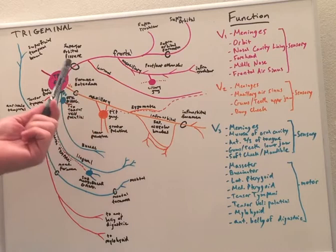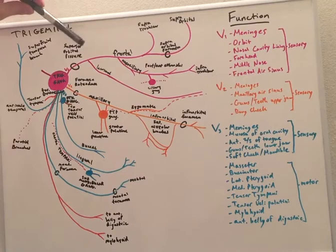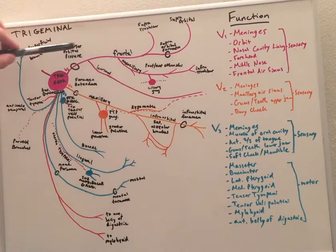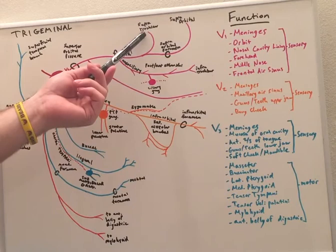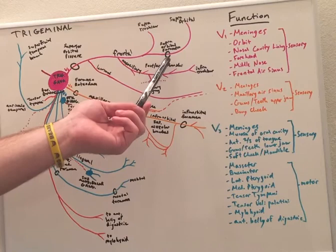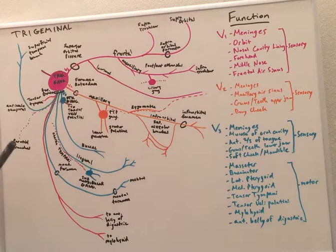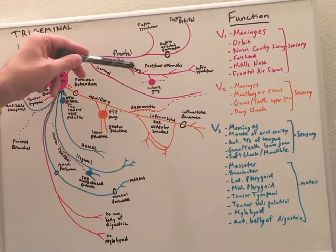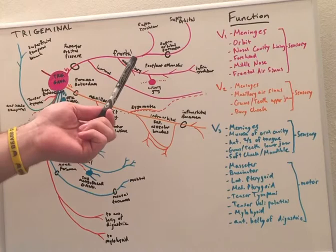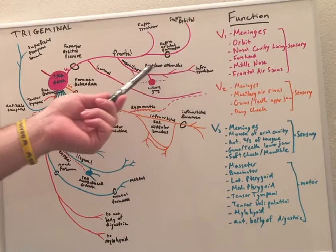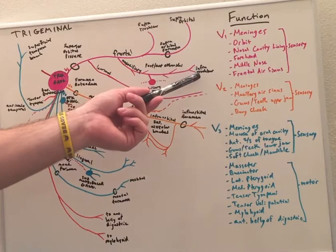So here we see the ophthalmic branch passing out through the superior orbital fissure and it branches into its three main branches: the lacrimal, the nasociliary, and the frontal nerves. Now the frontal further subdivides into the supratrochlear nerve as well as the supraorbital nerve which passes out of the supraorbital foramen and provides sensory information directly above the orbit. The nasociliary continues and has some of its fibers pass through the ciliary ganglia but does not synapse there, mainly uses it as a highway. It gives rise to the posterior and anterior ethmoidal nerves which provide sensory to the ethmoid bone and it ends as the infratrochlear nerve.